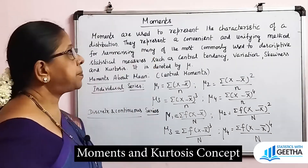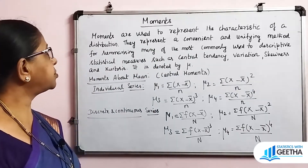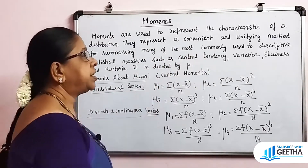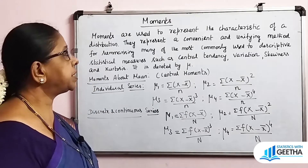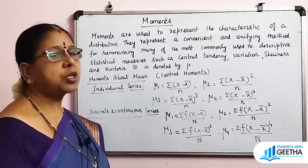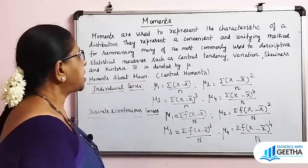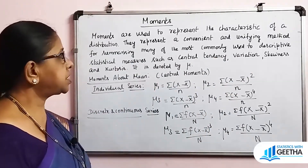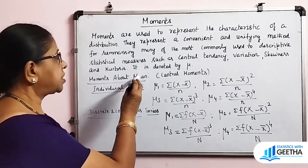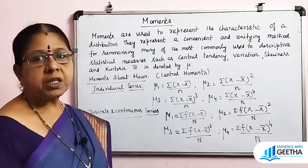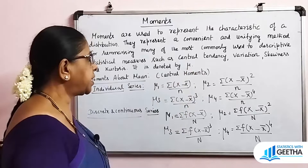Moments are used to represent the characteristics of a particular distribution. They represent a convenient and unifying method for summarizing many of the most commonly used descriptive statistical measures such as central tendency, variation, skewness, and kurtosis. Moments are denoted by mu, the Greek letter mu.